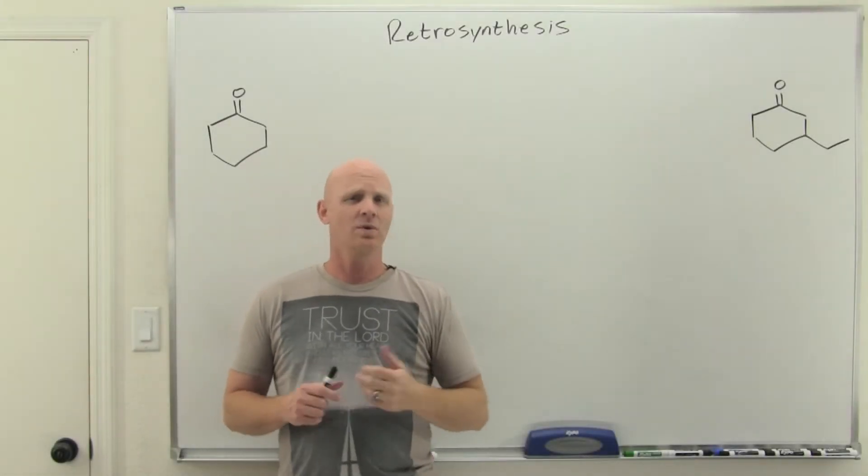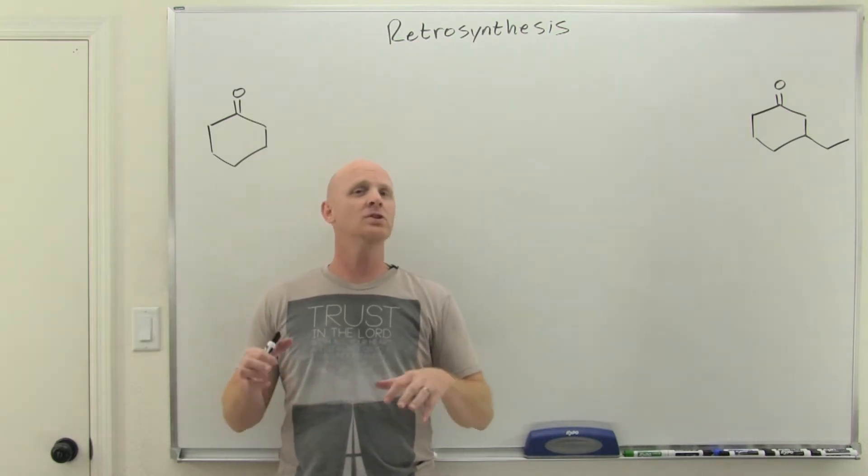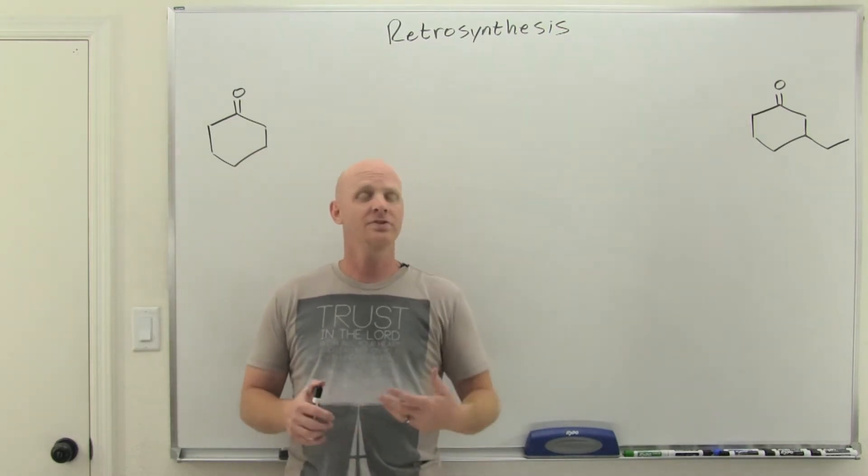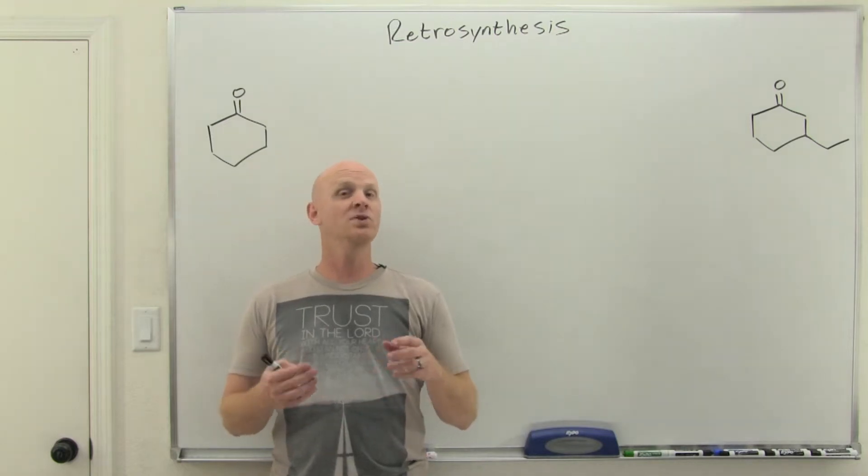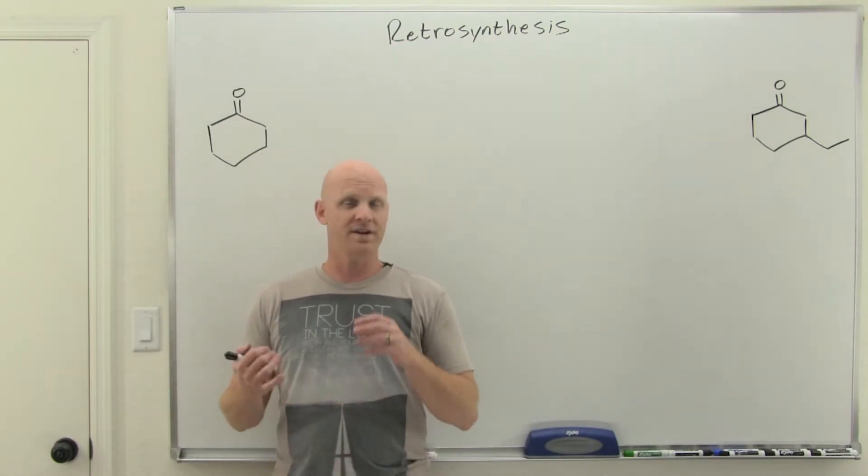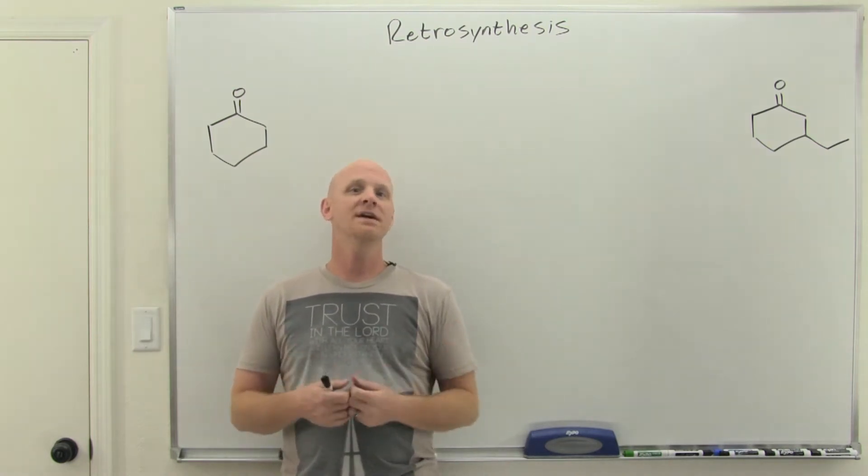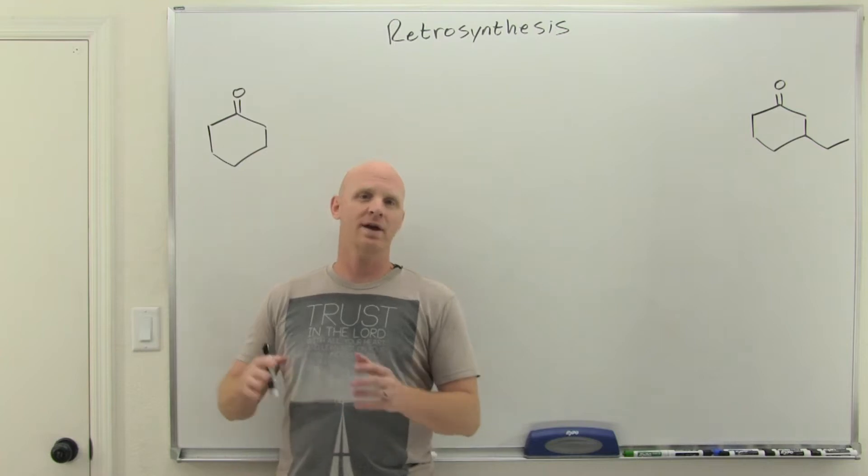Retrosynthesis is the topic in this lesson, looking at it in the context of alpha substitution reactions with enols and enolates we've been studying. Don't let it be lost on you that we've learned a few new ways of making carbon-carbon bonds in this chapter, and that's really important. We started with alpha alkylation, but the aldol and Claisen are ways of making new carbon-carbon bonds we haven't seen before.